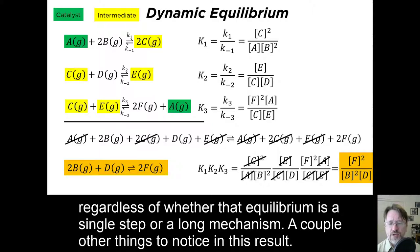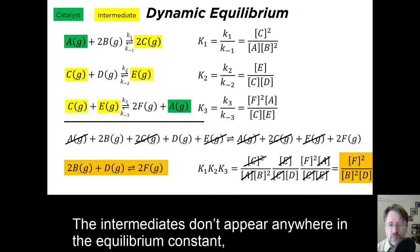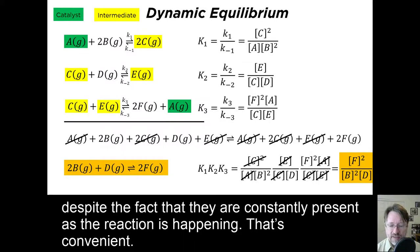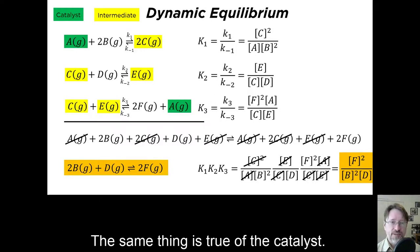A couple of other things to notice in this result. The intermediates don't appear anywhere in the equilibrium constant, despite the fact that they are constantly present as the reaction is happening. That's convenient. The same thing is true for the catalyst.